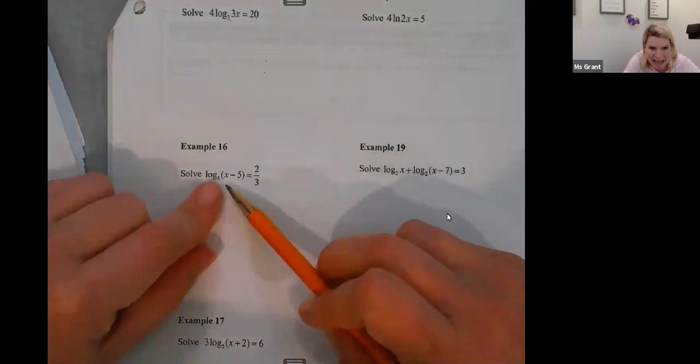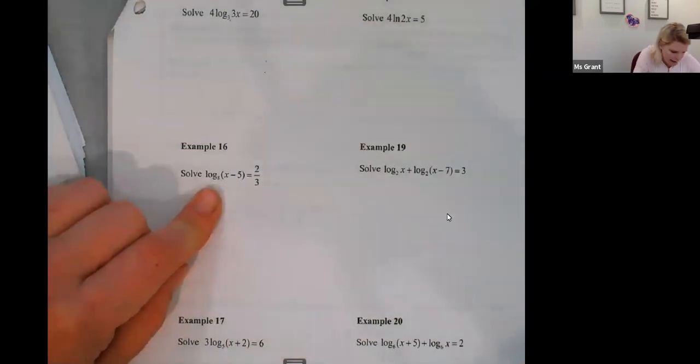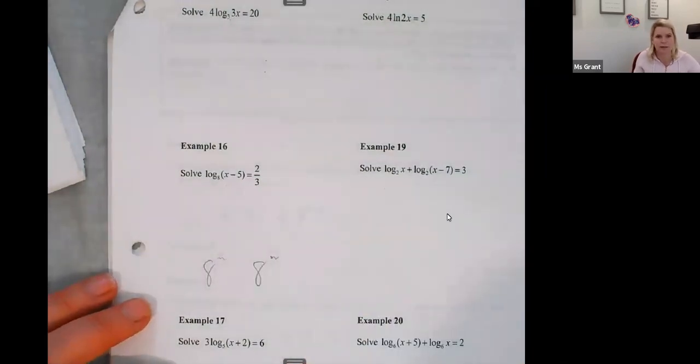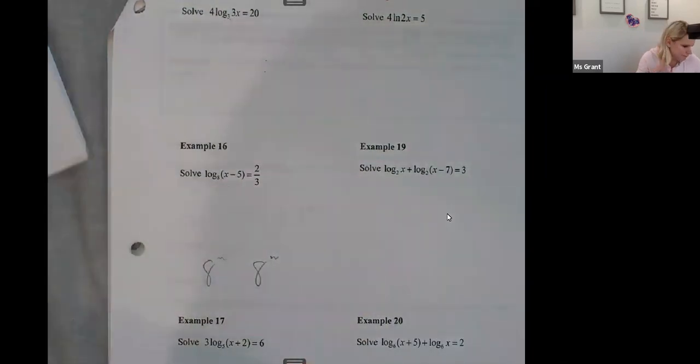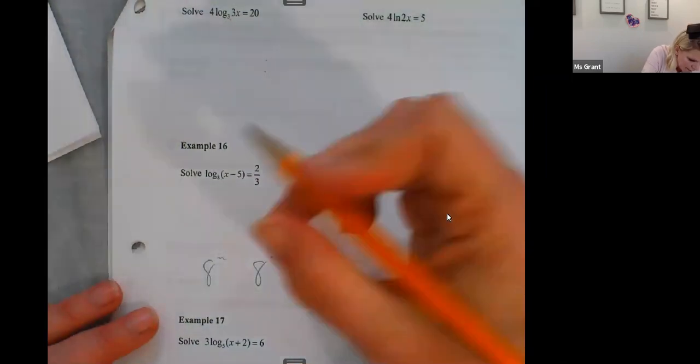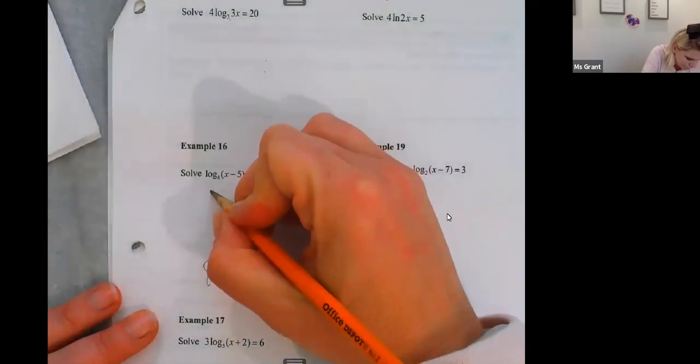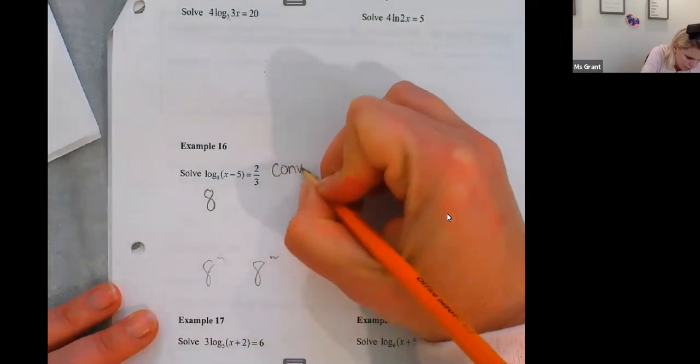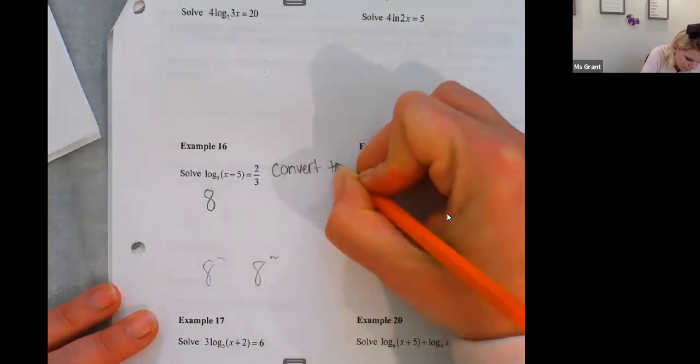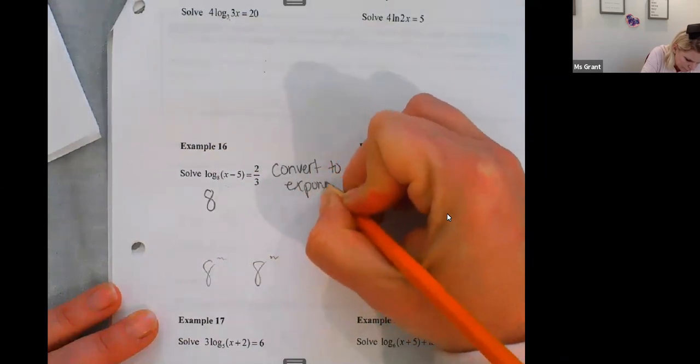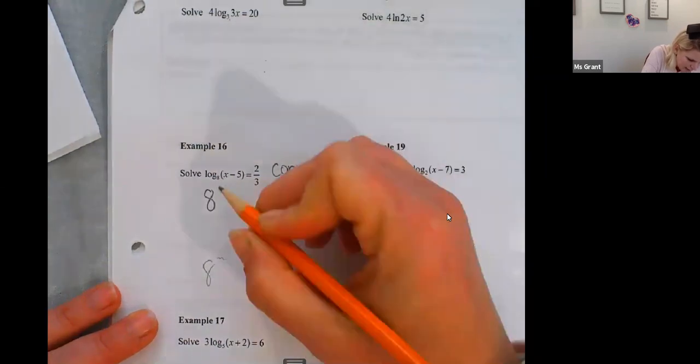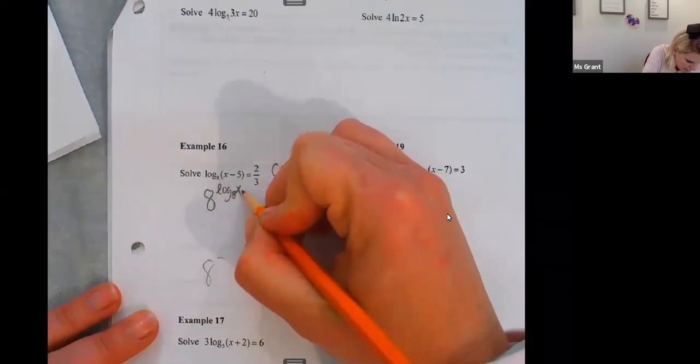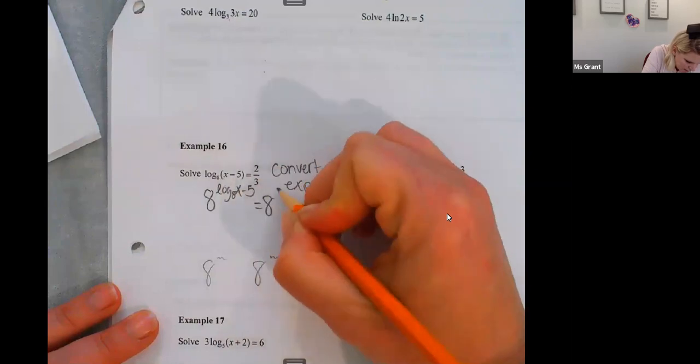So here's how we practice the exponentiate. This is base eight, which means I am going to end up having an eight eight to the something and an eight to the something. Here's what I mean. I'm going to raise base eight. So I'm converting this to exponential. Eight to the log base eight of x minus five is equal to eight to the two thirds.